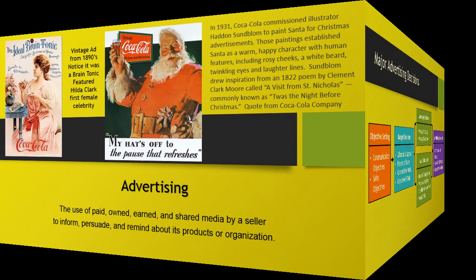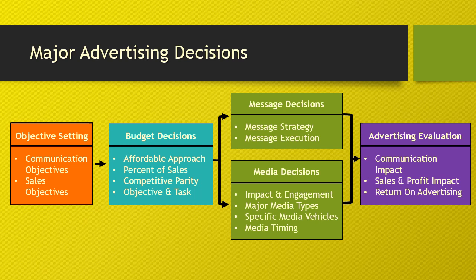Advertising decision-making involves determining the objectives, the budget, message, media, and finally the evaluation of results. Advertisers should set a clear objective as to whether the advertising is supposed to inform, persuade, or remind buyers. The advertising budget can be based on what's affordable, on sales, on competitor spending, advertising objectives, and tasks. The message decision calls for planning and creating concepts — big ideas — and the message strategy and its execution effectively. Media decisions involve defining the reach, frequency, impact, and engagement goals, choosing major media types, selecting media vehicles, and deciding on media timing. Message and media decisions must be closely coordinated for maximum campaign effectiveness. Finally, evaluation calls for evaluating the communication and sales effort for the advertising before, during, and after its placement — measuring advertising's return on investment.